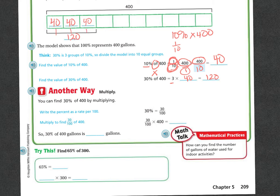Let's do another way. You can find the value of 30% of 400 by multiplying — write the percentage as a rate per 100. In order to do that, you're going to multiply 30 over 100 times 400. So 30% is the same thing as 30 over 100, and 'of' means multiply.